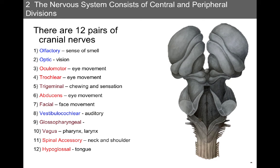Cranial nerve seven is involved in both sensory and motor aspects of the face. Cranial nerve eight, the vestibulocochlear, is a sensory cranial nerve important for hearing auditory information. Cranial nerve nine is the glossopharyngeal nerve. Number ten is the vagus, which is important for sensory and motor functioning in the pharynx and larynx. Eleven is the spinal accessory nerve, which plays a motor role in neck and shoulder muscles. And cranial nerve twelve, the hypoglossal, plays a role in motor functioning of the tongue.